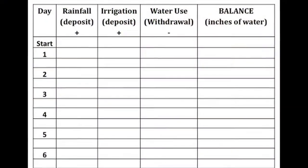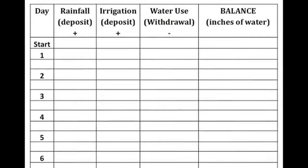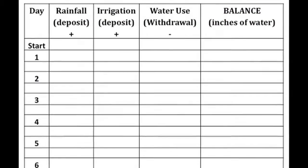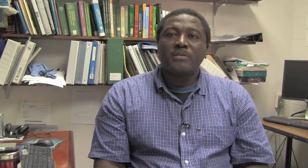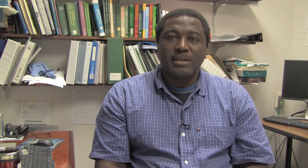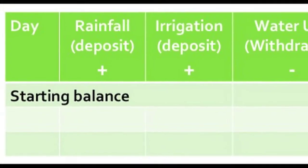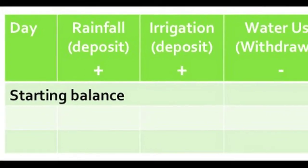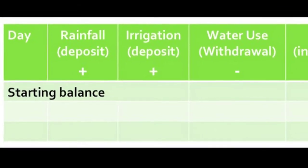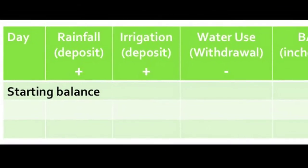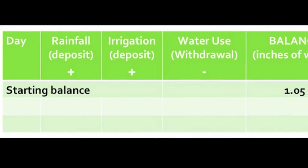You can also use the checkbook method, which basically combines evapotranspiration data from the weather station with a very rigorous bookkeeping procedure, similar to what you would do for your personal checking account. In the checkbook method, deposits are your rainfall and irrigation, and withdrawals are crop water use.